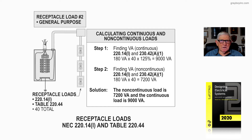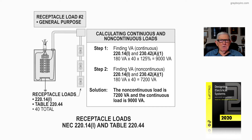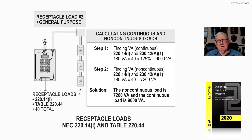Now let's look at figure 23-9, and we're going to figure the receptacle load, which is the second load we want to be looking at. We're looking at general purpose receptacles, which means they're operating less than three hours — this particular load. Notice the receptacle load is NEC 220.14(I), table 220.44, and we have 40 total. The table gives you a demand factor so that you can have less load on them because they're non-continuous use.